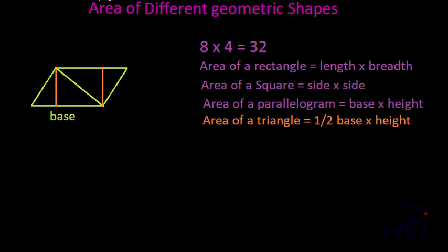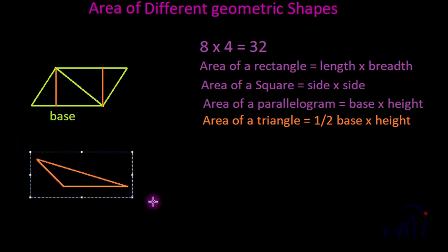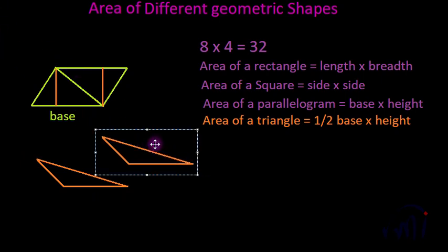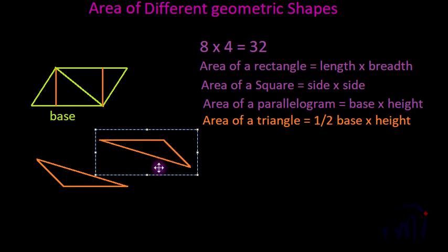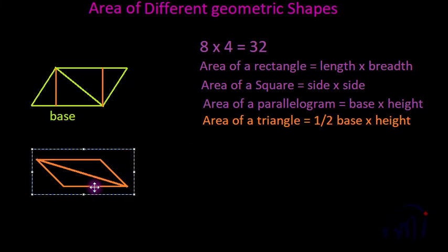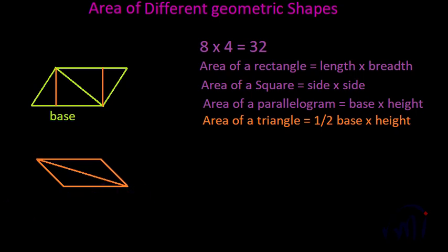This formula also holds for an obtuse angle triangle. Let me make an obtuse angle triangle — this can also be converted into a parallelogram by copying the triangle, flipping it vertically and horizontally, and joining it. The resulting parallelogram has area exactly double the triangle's area, so the area of a triangle is ½ × base × height for obtuse triangles as well.